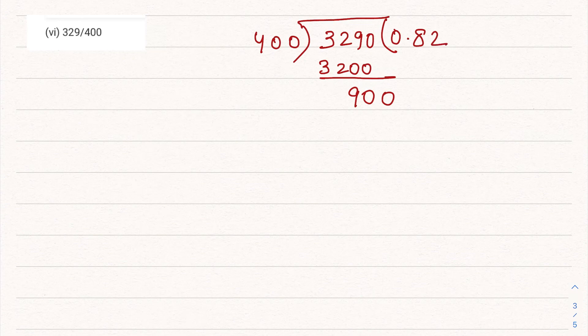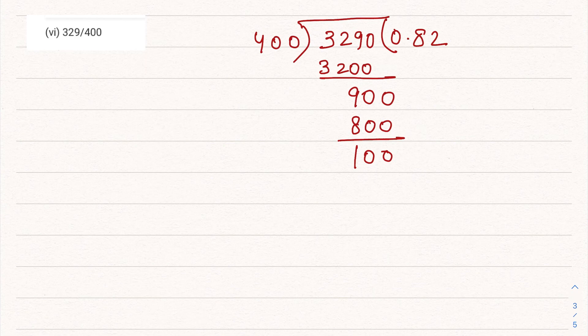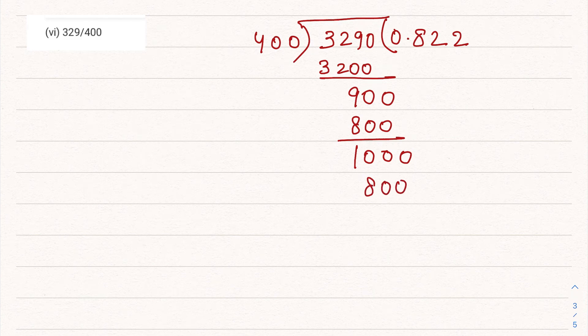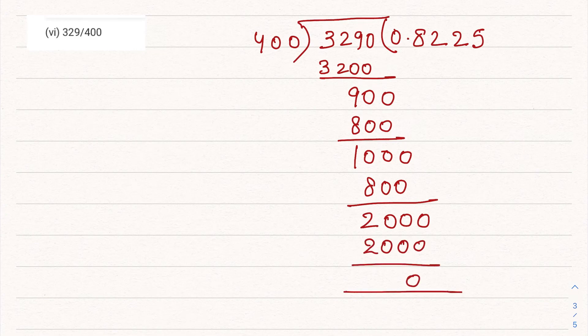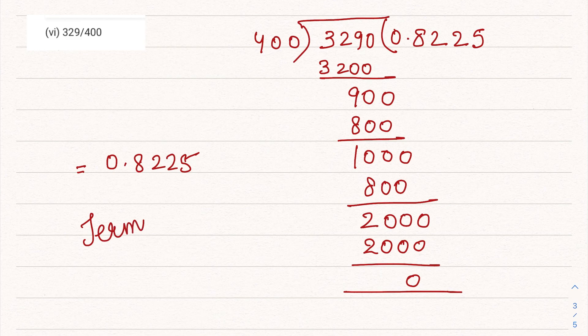This becomes 900. Now 400 twos are 800, remainder is 100. This becomes 1000, and 400 twos are again 800. Remainder is 200, this becomes 2000, and 400 fives are 2000. Here the remainder has become 0. So its decimal expansion is 0.8225, and of course it is a terminating decimal expansion.